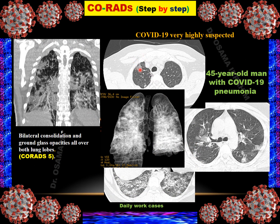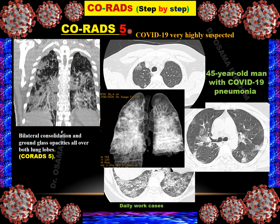Case 8: Patient with multifocal areas of ground glass opacity, distributed bilaterally and at the pleural surface location. All features of typical COVID-19 diagnosis are present. Minimum intensity projection and coronal reformatting show basal consolidations and peripheral and central lung abnormality. This was diagnosed as CO-RADS 5 — very high suspicion — and RT-PCR was positive.